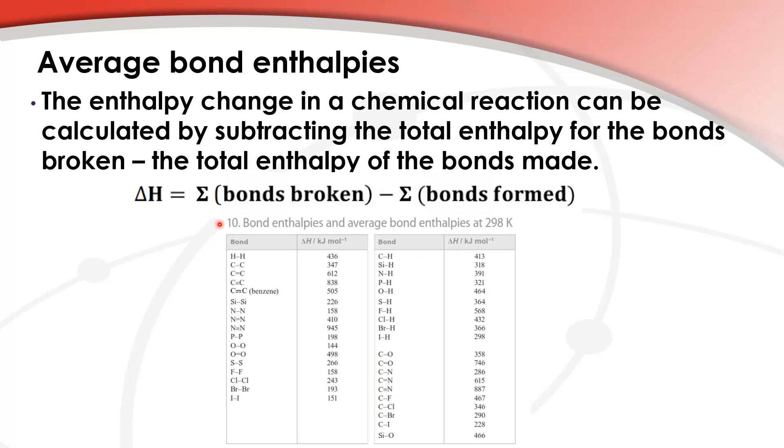In table 10 of the data booklet you can find bond enthalpies and average bond enthalpies at 298K. This table contains all the bond enthalpies that you need to do the calculations.